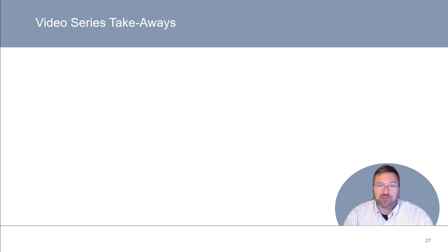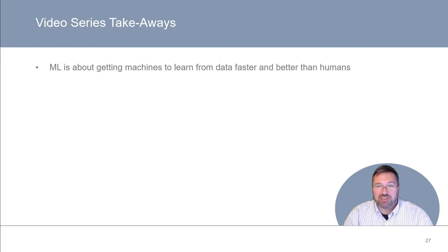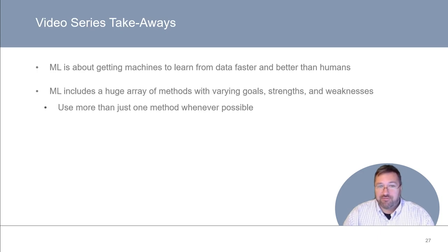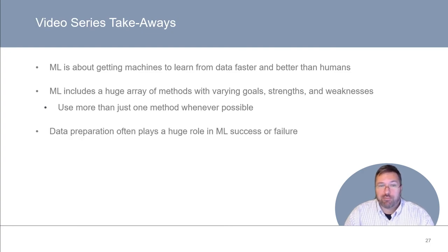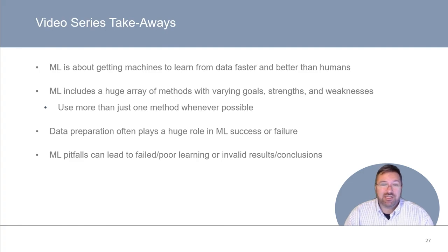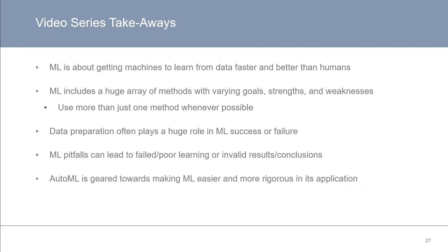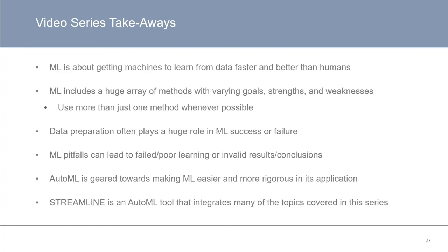We'll end this video series with some big picture takeaways. Machine learning is all about getting machines to learn from data faster and better than human beings can. The field includes a huge array of methods with varying goals, strengths, and weaknesses — so as a rule of thumb, always use more than one method whenever possible. Data preparation often plays a huge role in the success or failure of downstream modeling, and machine learning pitfalls can lead to failed performance or invalid results. Automated machine learning is an exciting new area aiming to make machine learning easier and more rigorous, and Streamline is a great way to quickly try out machine learning for yourself and see how a pipeline can be coded in practice.